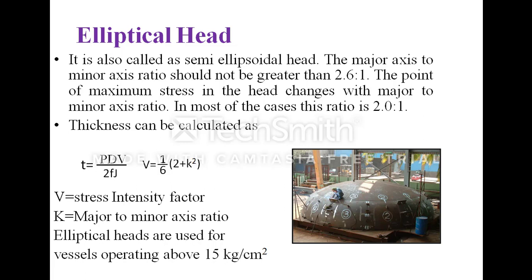The next one is the elliptical head, also called a semi-ellipsoidal head. The major axis to minor axis ratio should not be greater than 2.6:1. The point of maximum stress in the head changes with the major to minor axis ratio; in most cases this ratio is 2:1. The thickness of an elliptical head is calculated by t = p·D·v / (2·f·j), where v is the stress intensity factor given by v = (1/6)(2 + k²), and k is the major to minor axis ratio.